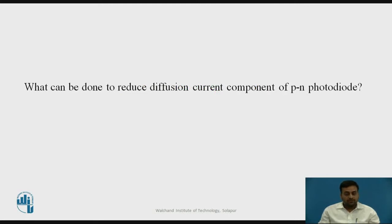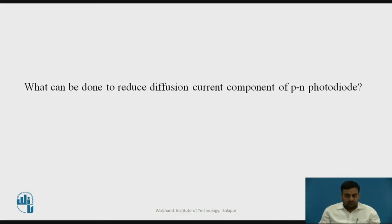You may pause the video and try to find out the answer to this question: What can be done to reduce the diffusion current component of a PN photodiode? As we discussed, the diffusion process is slow and limits the response or speed of a photodiode. To reduce the diffusion current component, we can increase the width of the drift region so that more and more incident photons get absorbed in the drift region only.